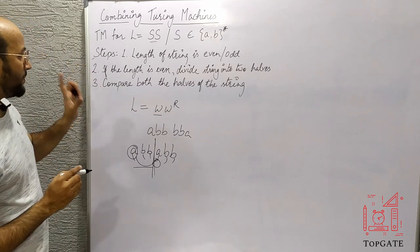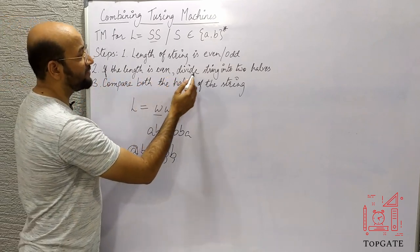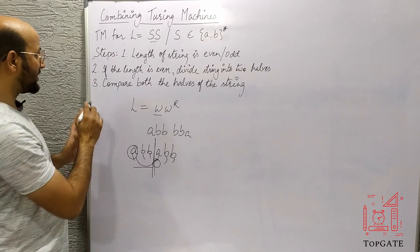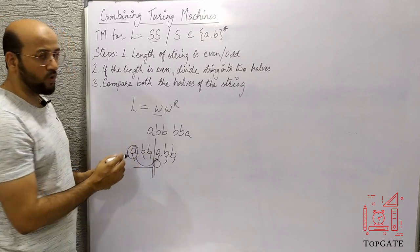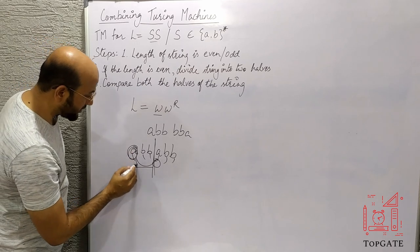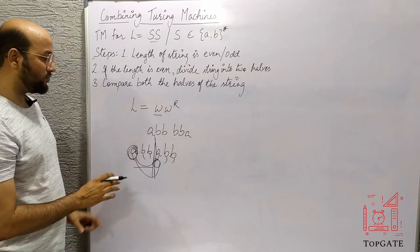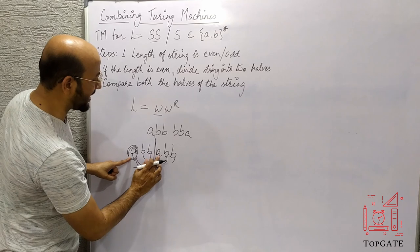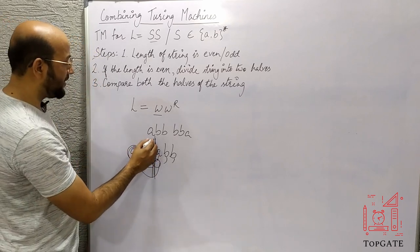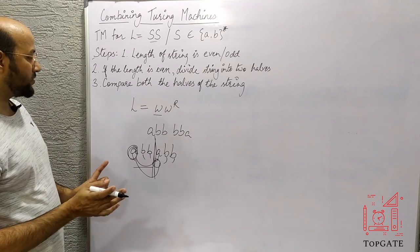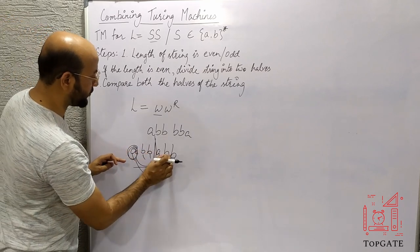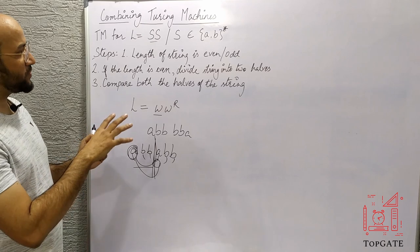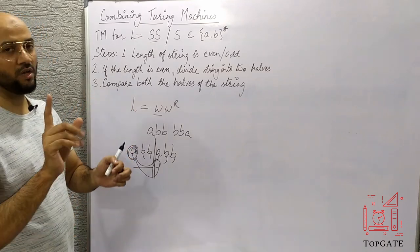So the first prerequisite is the length of the string must be even. If this is confirmed, we go to the second step: divide the string into two halves. Once we know the center, we can compare the first part with the second part. These three steps — checking even length, dividing into halves, and comparing — we will do independently and then combine them all into a single Turing machine.